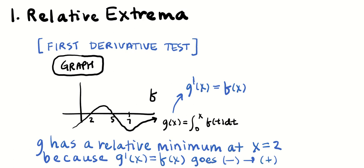Ideally we're writing out the words 'negative' and 'positive,' but sometimes we don't have much time. One thing to note: on a problem I graded last summer, saying 'x equals 2 is the relative minimum' lost the justification point, because x equals 2 is the location of a relative minimum. So saying 'g prime, which is f, goes from negative to positive' is the correct justification. That might not be acceptable on the AP exam if you just state x equals 2.